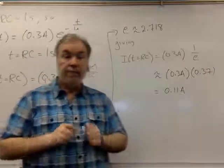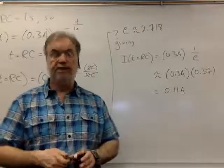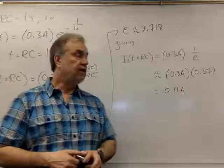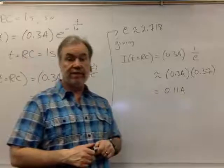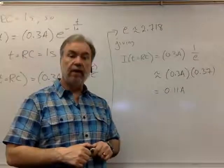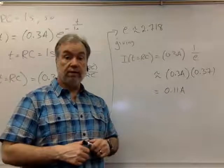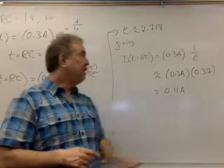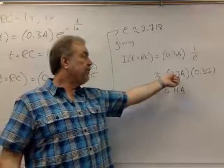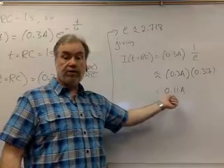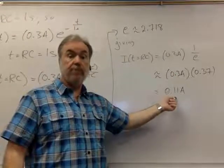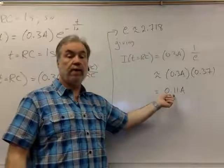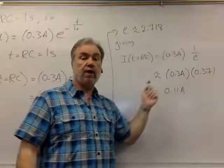So the answer to my intermediate question is, which was, how much current is flowing one second after I connected it? In other words, how much current is flowing at a time equal to r times c after I closed the circuit and allowed the capacitor to start discharging? The answer is about 0.11 amps. And the initial current was 0.3 amps. After one second, the current that's flowing through the resistor, through the light bulb, has dropped down to just 0.11 amps, a little over a third of a drop.